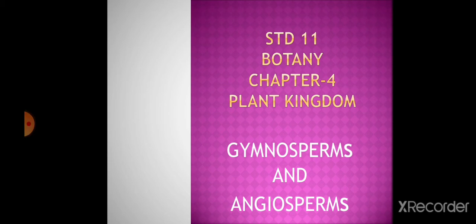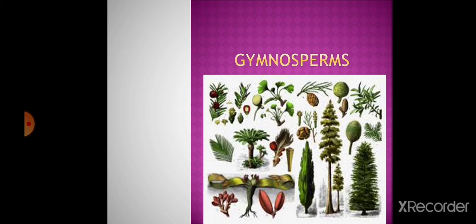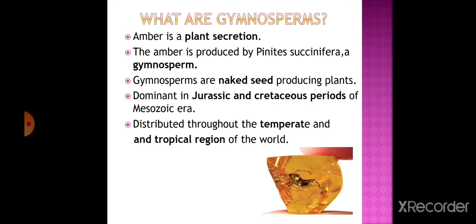Welcome to 11th standard botany class. Today we are going to discuss Chapter 4: Plant Kingdom - Gymnosperms and Angiosperms. Have you seen the Jurassic Park movie? In this film you might have noticed insects embedded in a transparent substance. That is called amber. Amber is a plant secretion that is an effective preservative - it does not get degraded and can preserve remains of extinct life forms. Amber is produced by Pinus succinifera, a gymnosperm.